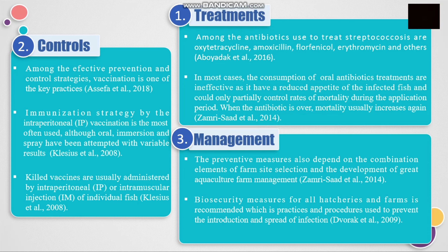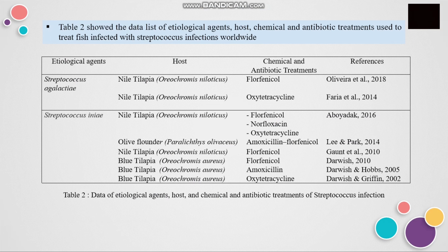Among the effective prevention and control strategies, vaccination is one of the key practices. Immunization by intraperitoneal vaccination is most often used, although oral, immersion, and spray methods have been attempted with variable results. Killed vaccines are usually administered by intraperitoneal or intramuscular injection of individual fish. For management, preventive measures also depend on a combination of farm-site selection and the development of good aquaculture farm management. Biosecurity measures for all hatcheries and farms are recommended, including practices and procedures used to prevent the introduction and spread of infection.